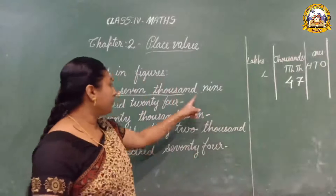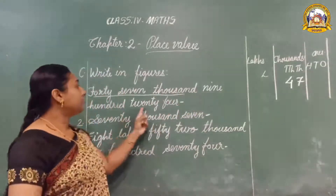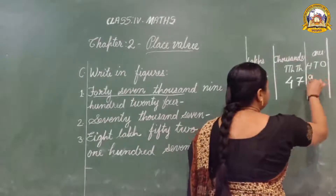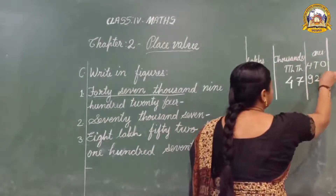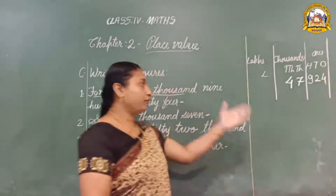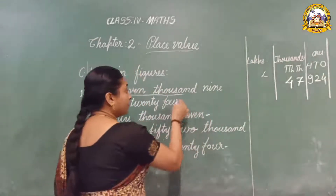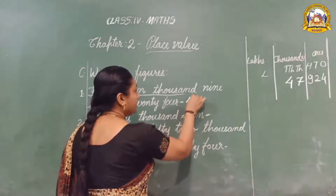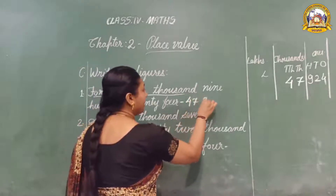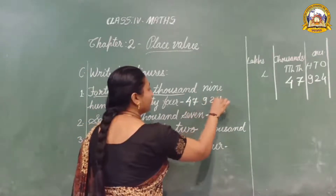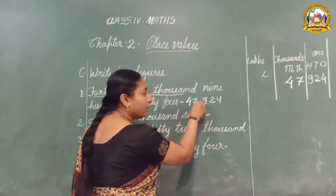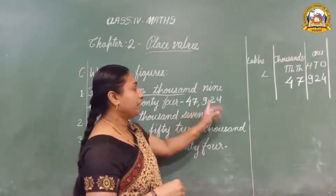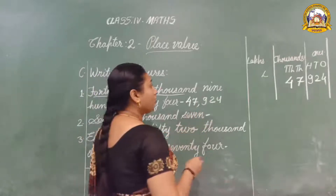Next, what is written then? 924. How many hundreds are there? 924. We got the number very easily. Let us write the figure: 47,924. We have to put a comma here to separate the places.